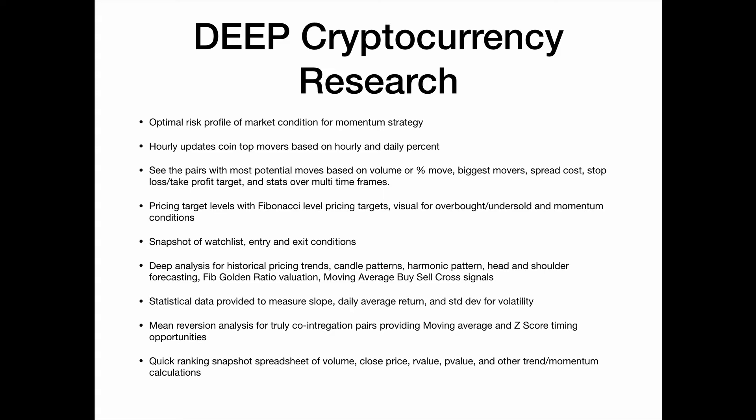There are pricing target levels based around Fibonacci pricing targets. You can also see visual overbought and oversold conditions via RSI and momentum conditions. There are snapshots for watch list entry and exit conditions, plus deep analysis for historical pricing trends, candle patterns, harmonic patterns, head and shoulder forecasting, Fibonacci golden ratio evaluation, and moving average buy and sell cross signals.